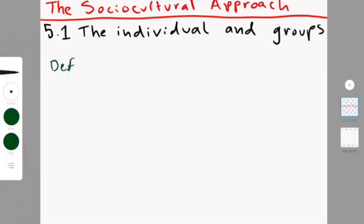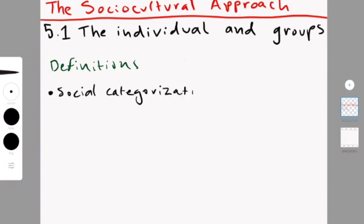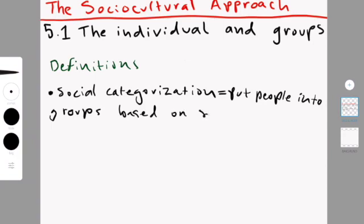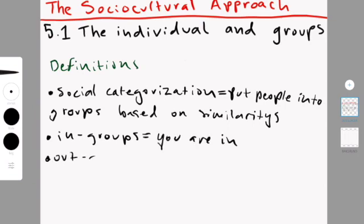Before we get into the study, let's go through some definitions you'll need to know. Social categorization is essentially when you put people in certain groups because of similar characteristics, similar preferences, any similarity, and you can group them into groups. This is something that a lot of people believe happens automatically. You just see someone and categorize them, for instance by gender.